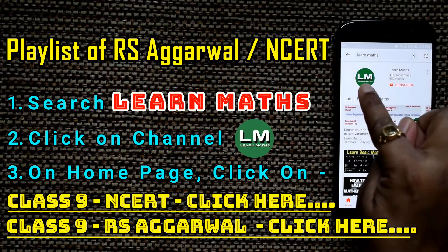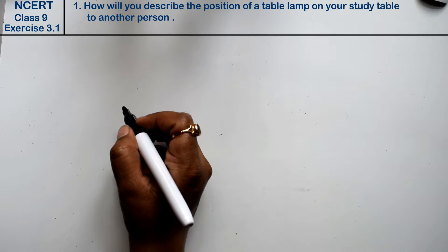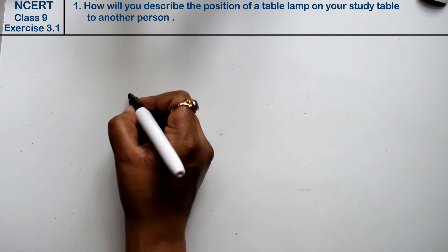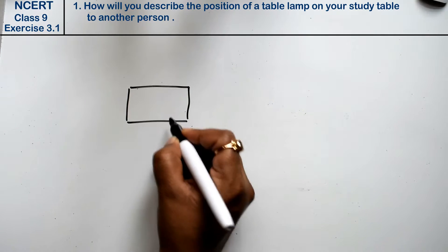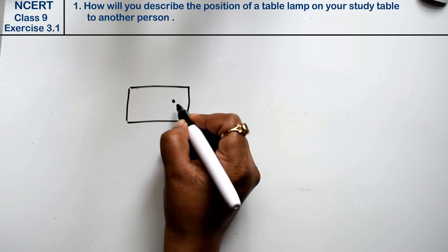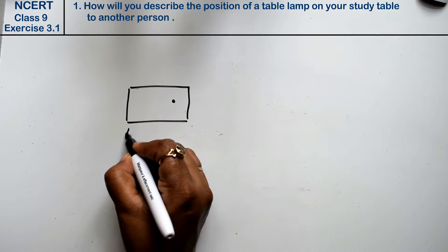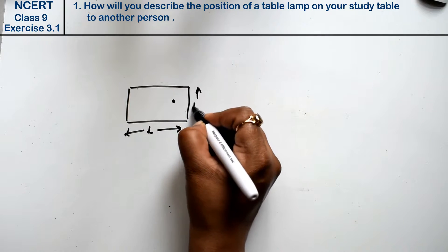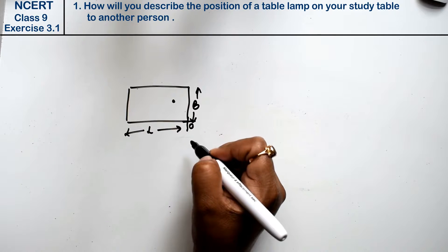Let's do question number one of Exercise 3.1, that is coordinate geometry. Question number one is: how will you describe the position of a table lamp on your study table to another person? A table lamp is kept on our table, so we need to describe this lamp's position for someone else. We know this length and this breadth, and where they cut is called the origin point.